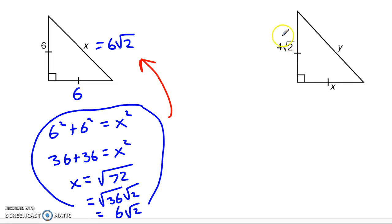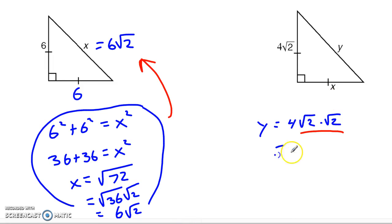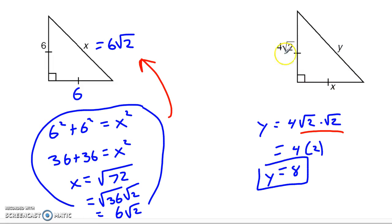Similarly, over here, if the leg is 4√2, then y has to equal whatever the leg is times the square root of 2 — the exact same pattern. So what is √2 times √2? Squaring a square root undoes itself — those are inverse operations. So we have y equals 4 times 2, which is 8. That's all we need to do. I don't need to go into the Pythagorean theorem; I can just follow the pattern.